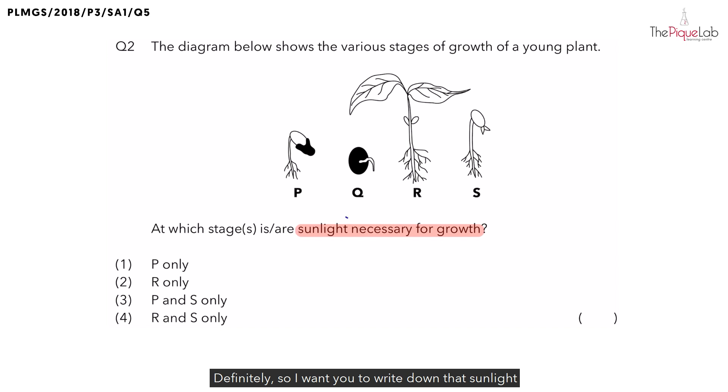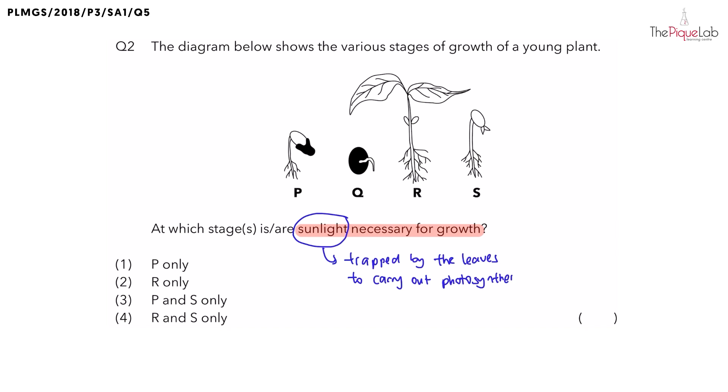I want you to write down that sunlight is trapped by the leaves to carry out photosynthesis in order for the plant to make food. So, to find out which stages need sunlight in order to grow, we just have to look at the stages that has the true leaves.